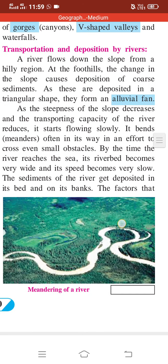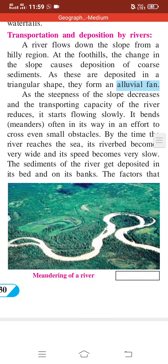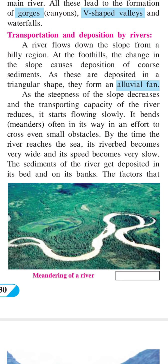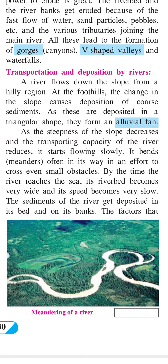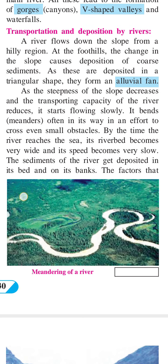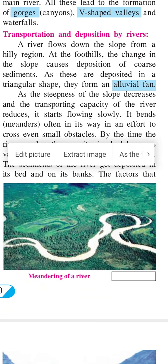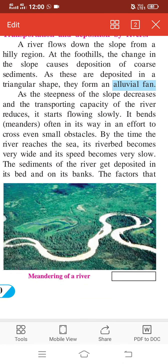As the steepness of the slope decreases, the transportation capacity of the river reduces and the water speed decreases. When the speed decreases, erosion also decreases. Then the river starts to form meanders — it begins to run in a zigzag way. You can see in this picture, the river takes this zigzag course, which is called a meander.